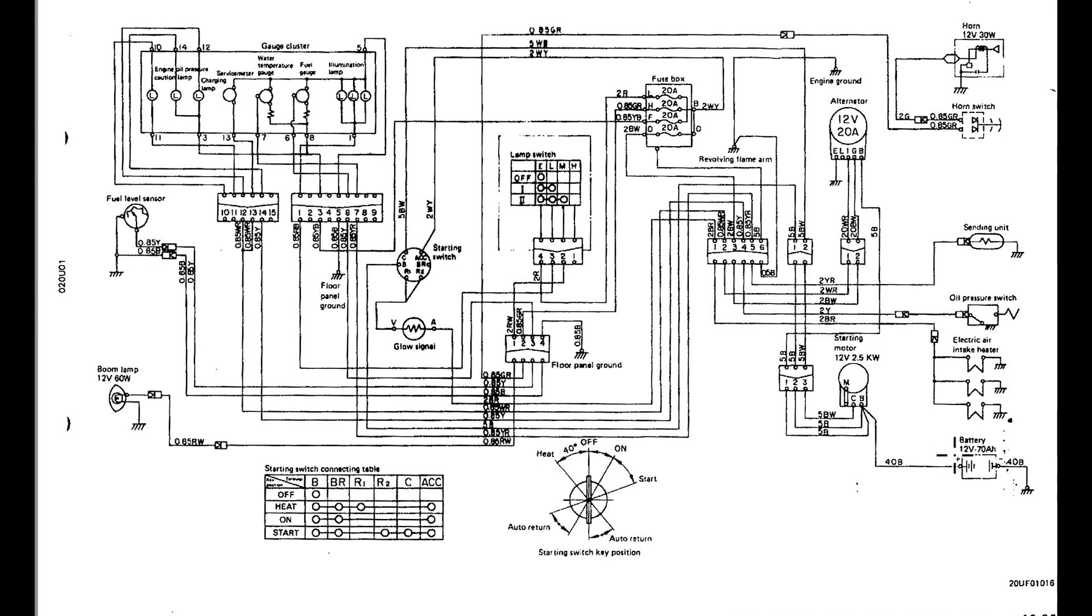And we have a battery here, and it describes the battery as 12 volt and 70 AH, which means amp hours. And we have a plus on one side and a minus on the other side. So, that would indicate that this is a negative ground system.